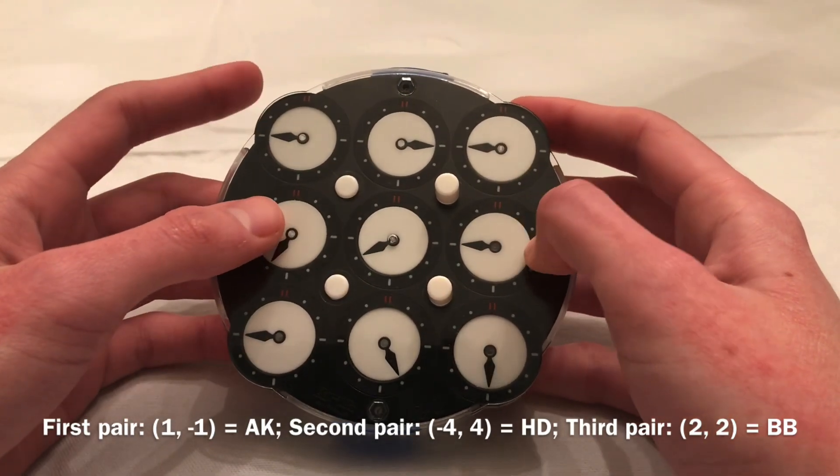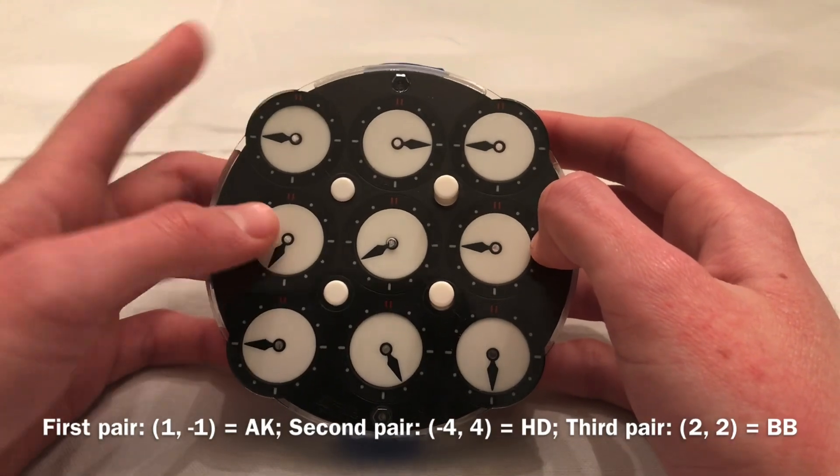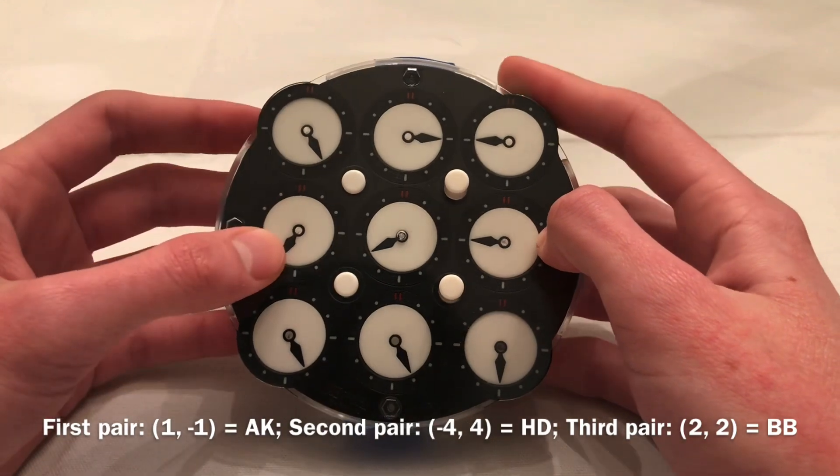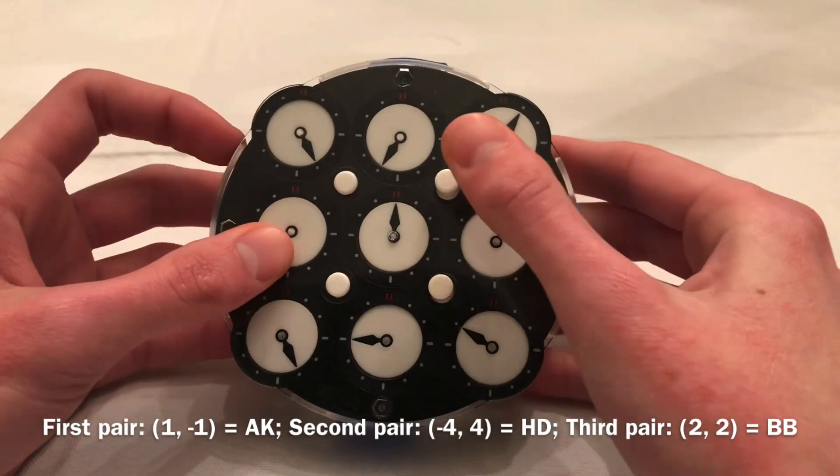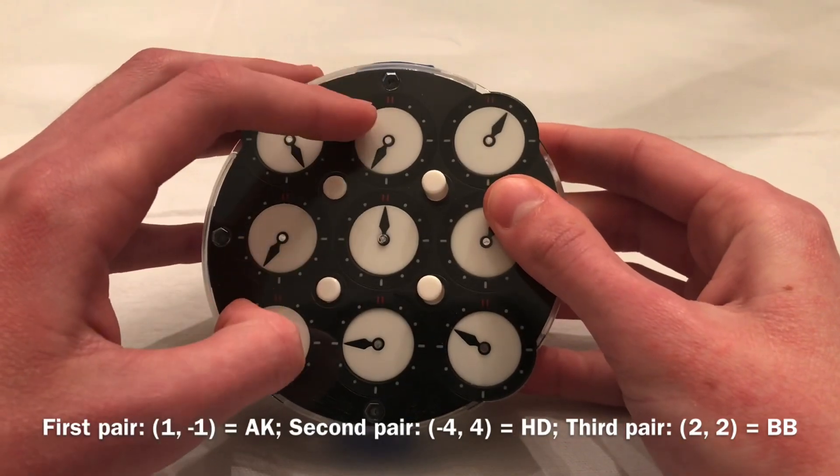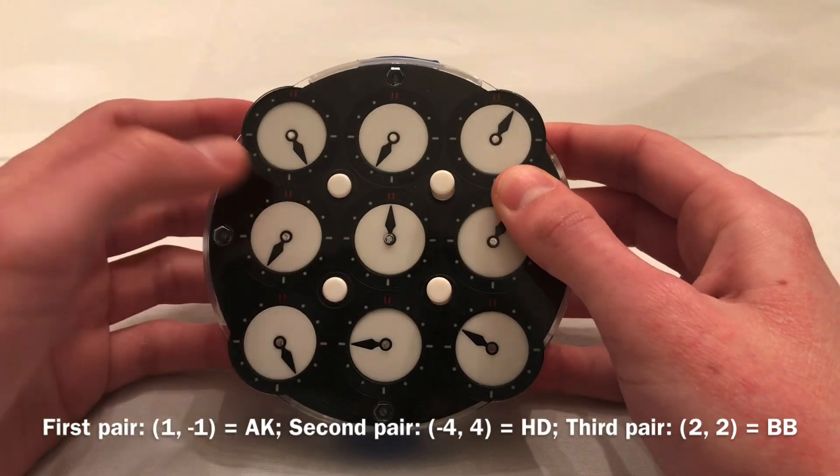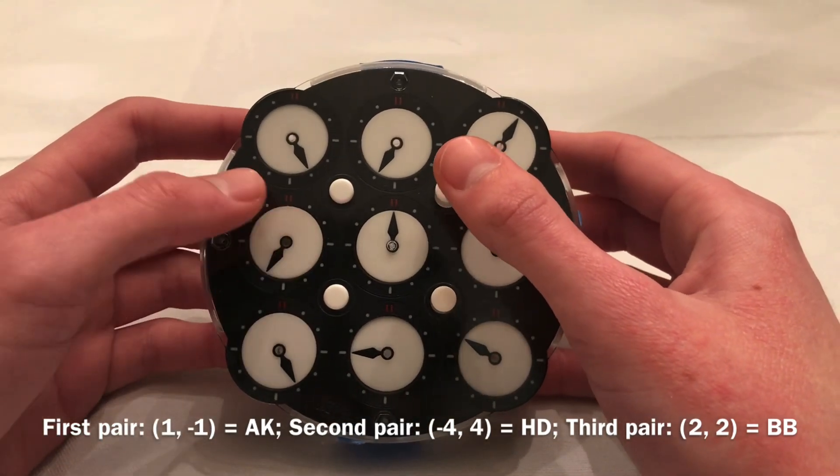So, then time for my second pair, which was hide. So, h, which is negative 4, and then d, which is plus 4. Notice how you actually didn't need to memorize the d, because it's intuitive, it'll always match to this clock, but I just memorize it to maintain fluidity in my solves and consistency in my memo.